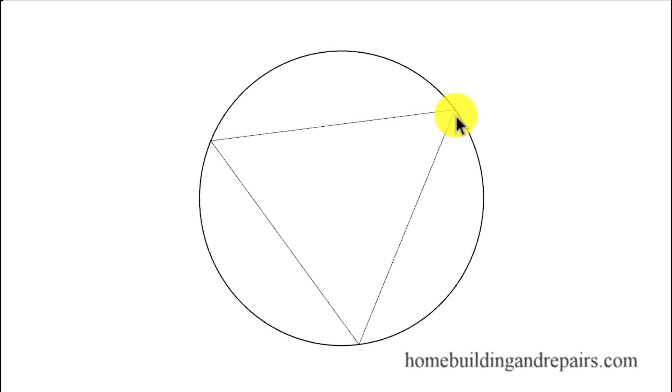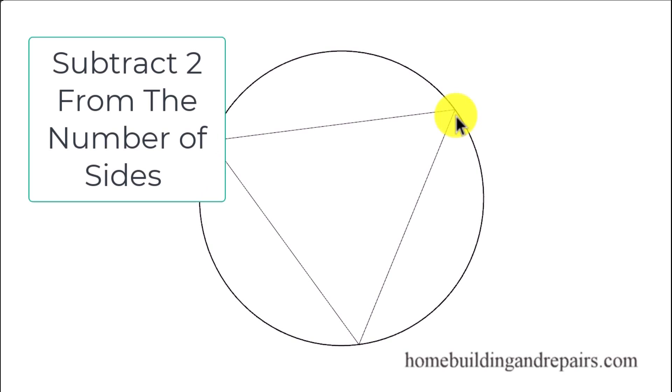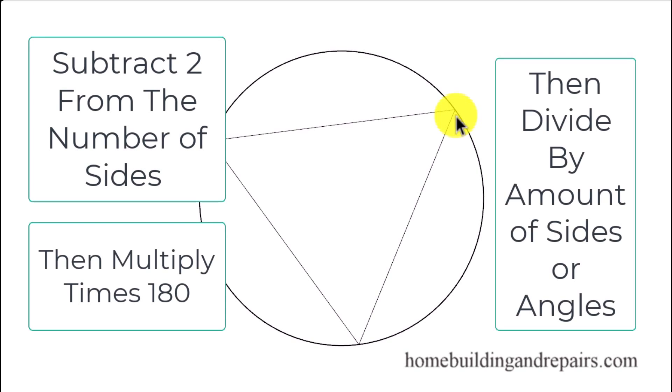The math formula for figuring out the inside angle will simply be to subtract the number two from the amount of sides, then multiply that number by 180, and then divide that number by the amount of angles to figure out what each individual angle would be.